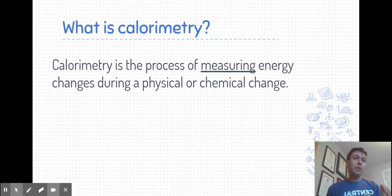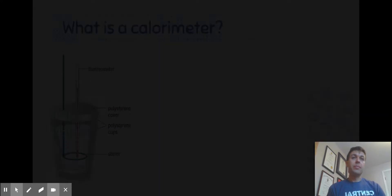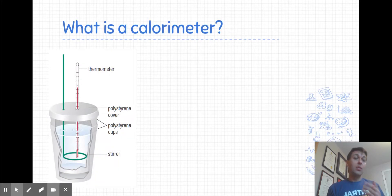Let's start off with a definition. Calorimetry is simply the process of measuring energy changes that occur in physical or chemical changes. In order to carry out the process of calorimetry we use a calorimeter, a device that's designed to measure the energy exchange by reducing the amount of energy that's lost to the rest of the environment or the surroundings.